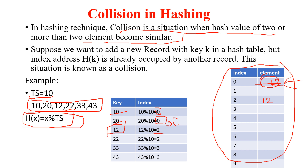Now coming to 22. If you calculate the index of 22, again you will get 2 — that second index. Now check the hash table: is the second index free? No, this index is not free. So 22 is also not going to be stored.